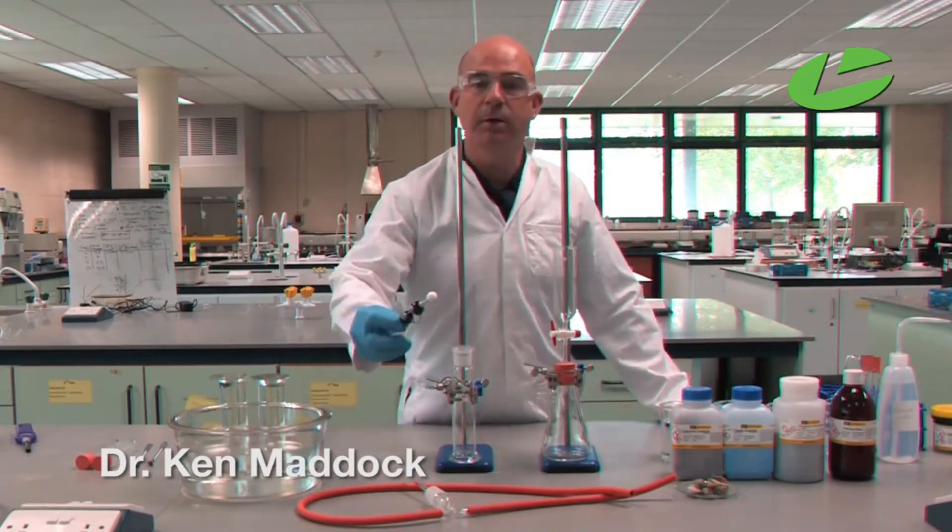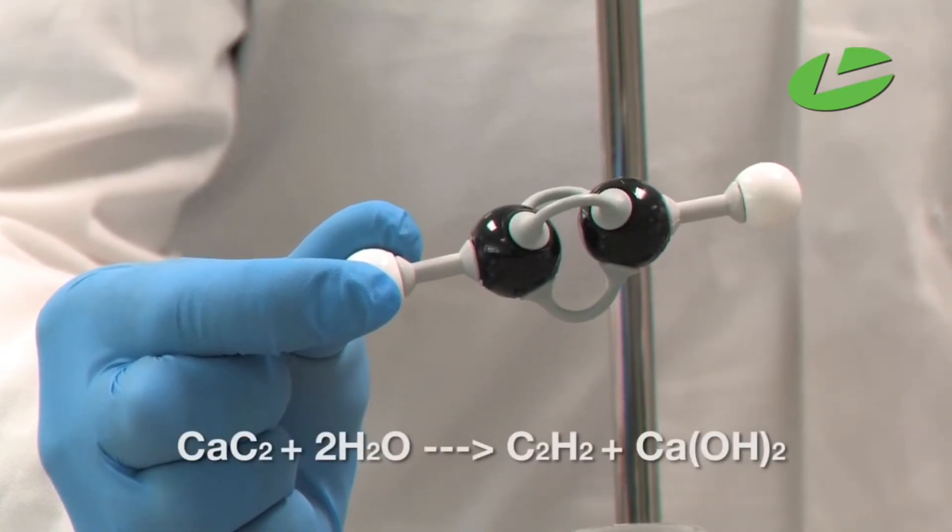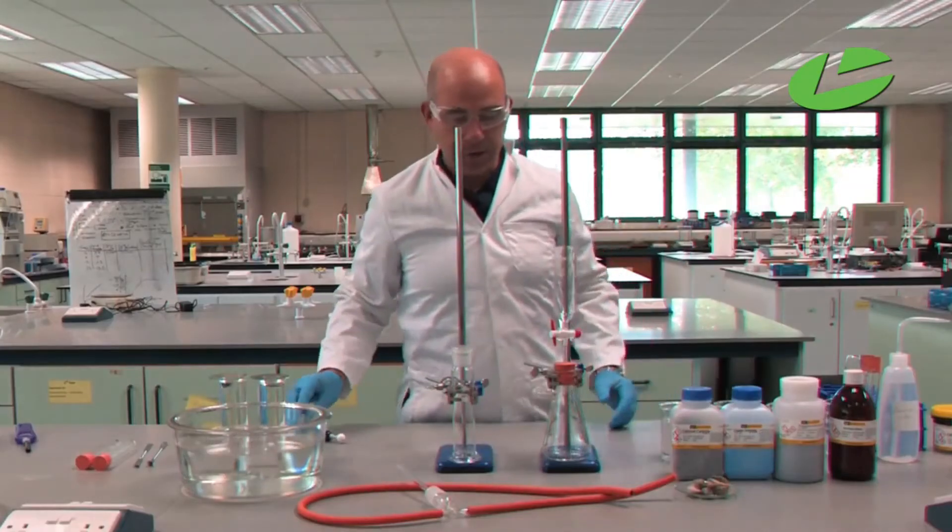In this practical, we're going to prepare ethyne gas. Here is the model of ethyne gas - two carbons bonded by a triple bond with two hydrogens at either end.